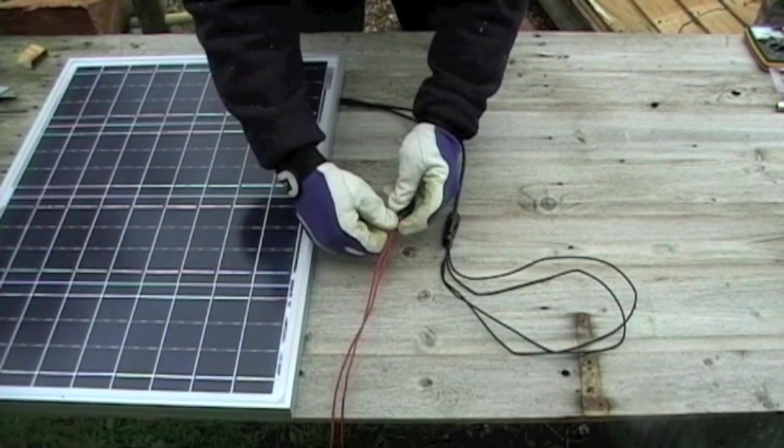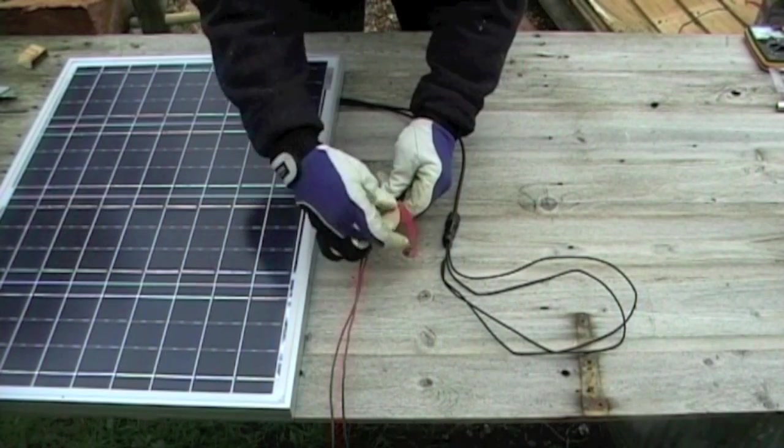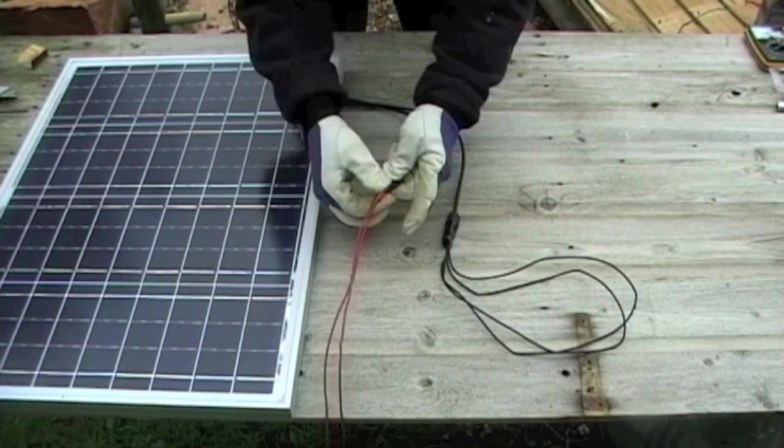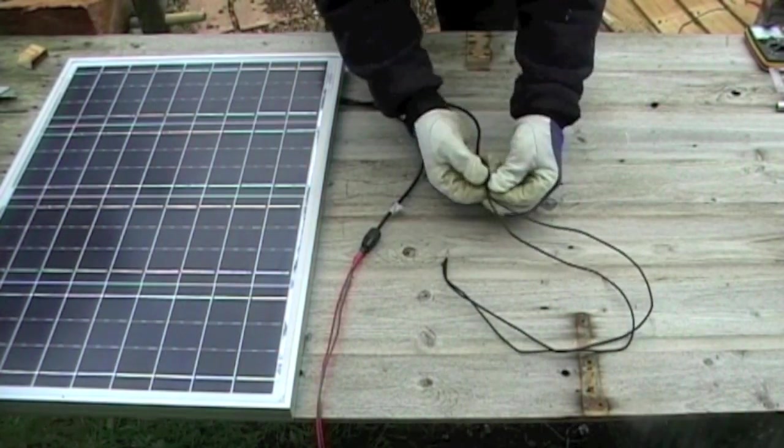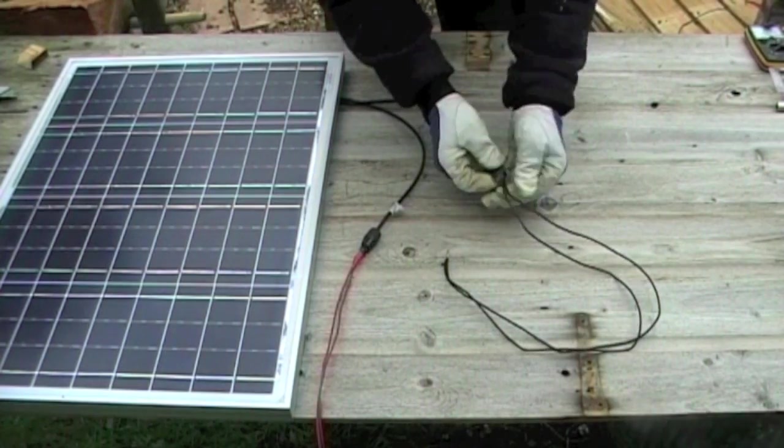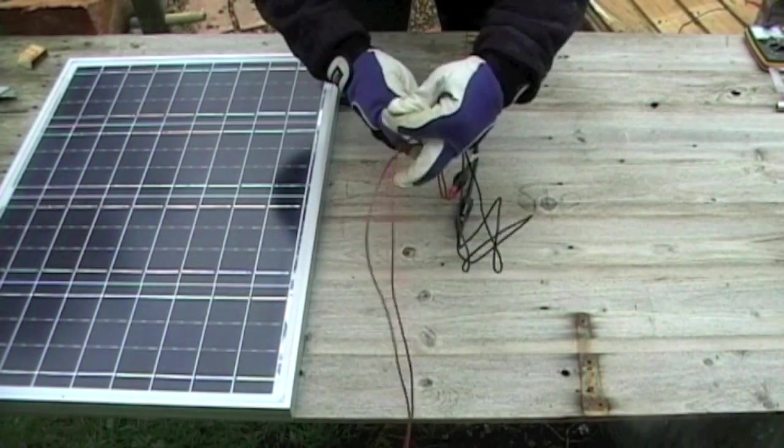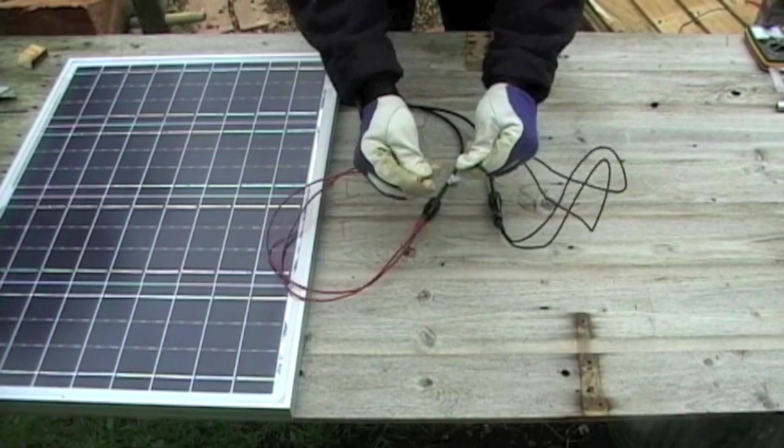To stop the wires falling out, I'll tape the connectors with some insulation tape. Those are done, so I'll get them out of the way. I need to be careful the bare wires don't touch.